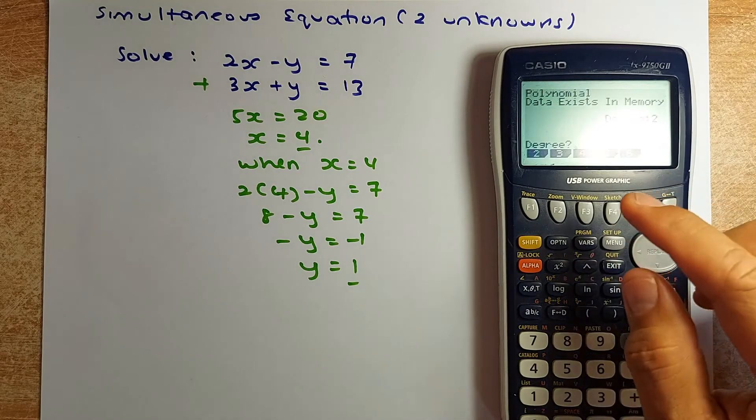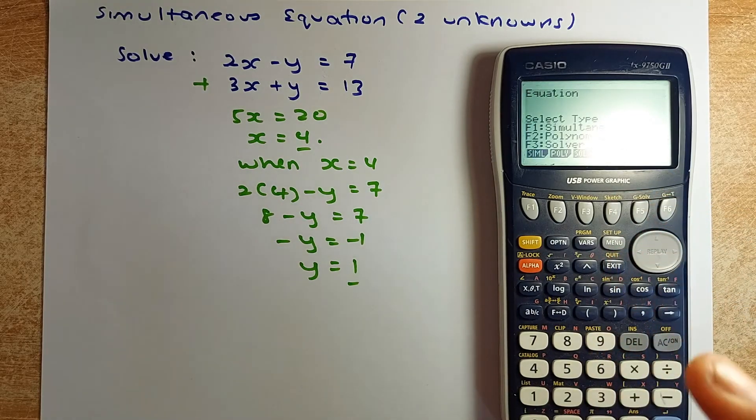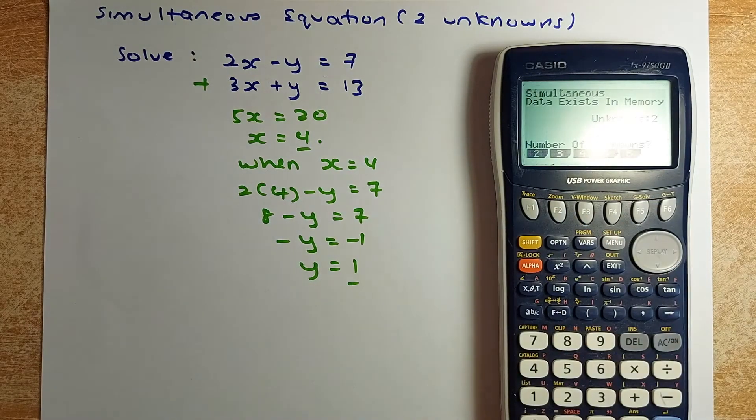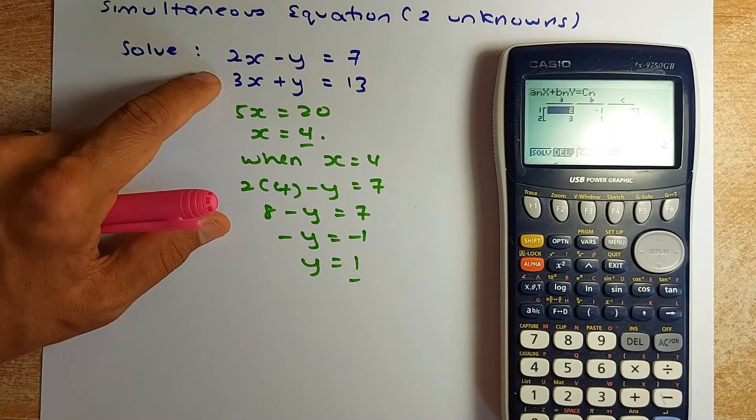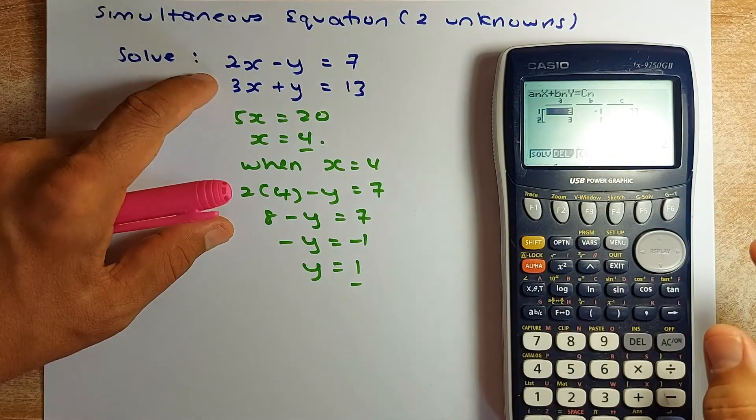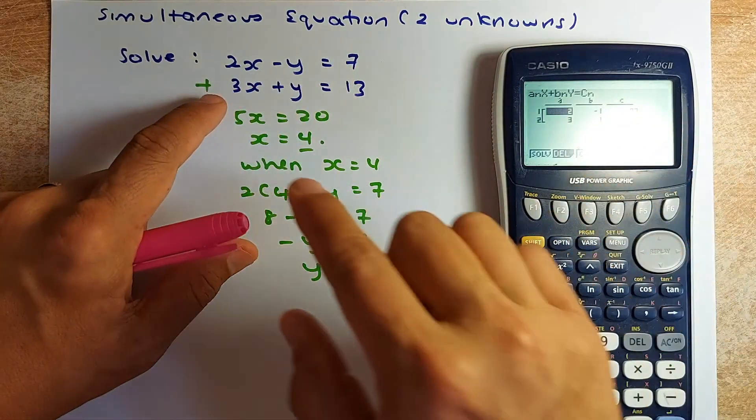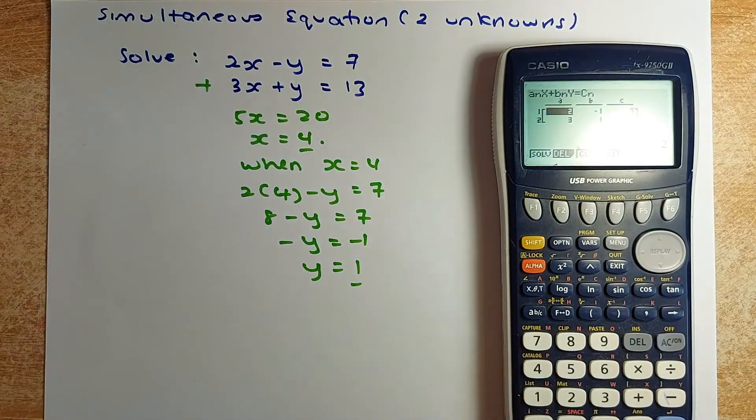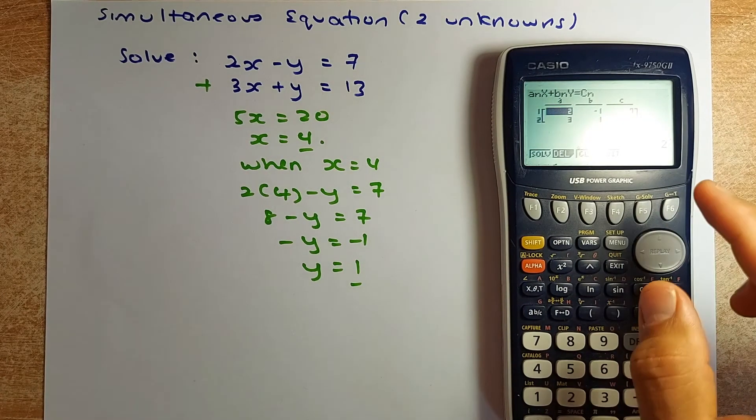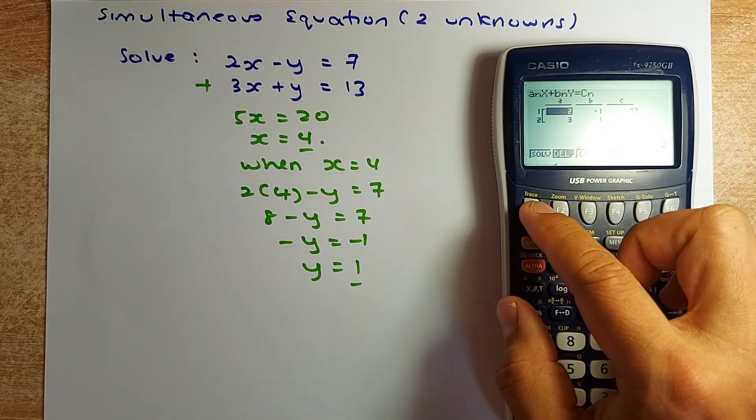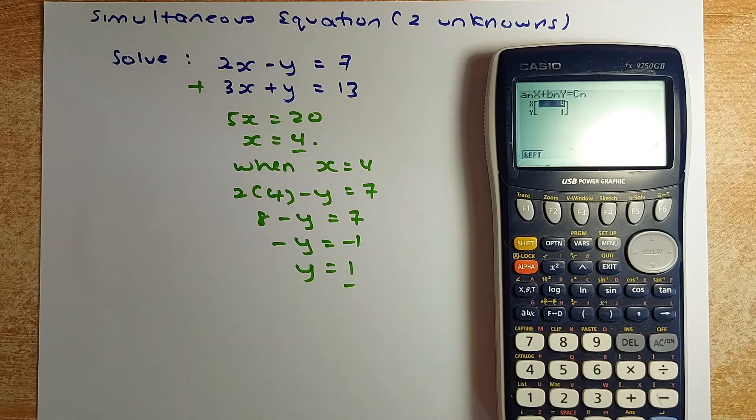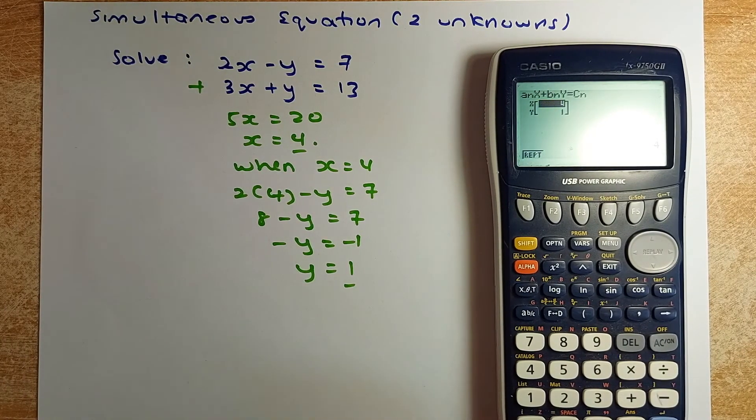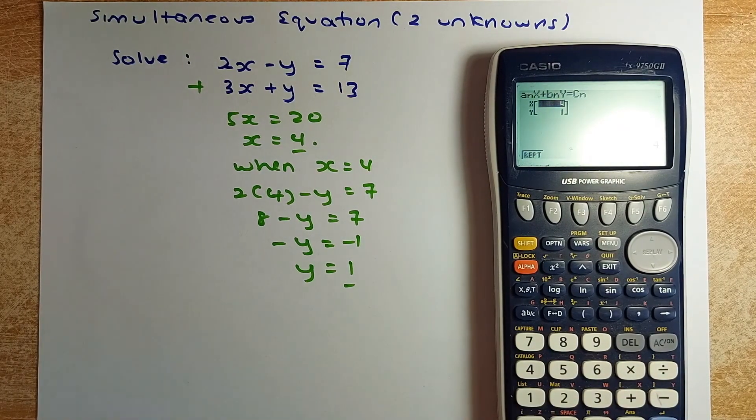Now we have, instead of F2 or F3, we are going to do F1. F1 is simultaneous. And there are 2 unknown, 2 equation, degree 2. Now we are going to put the number. So I have put there already. 2 minus 1, 7. And the second number is 3, 1 and 13. Now the last step we are going to do, once you have done it, just press the execute button, which is solving button, sorry, and solve. And the answer is x equal to 4, y equals to 1. So hope you have learned something from this video. And keep on practicing and use the calculator to help you check your answers. Have a good day and enjoy yourself.